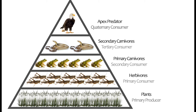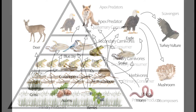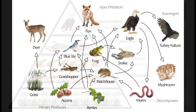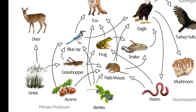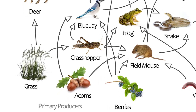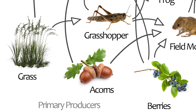While a food chain shows one example of the connections between wildlife in an ecosystem, a food web shows all of the connections. The arrows can make it look a bit confusing, but it's pretty similar to a food chain. In the bottom left we have our primary producers, just like in the food chain.